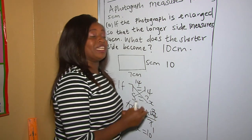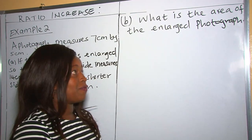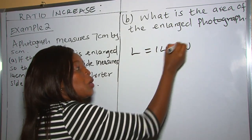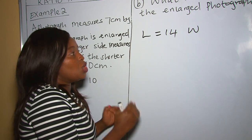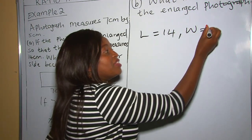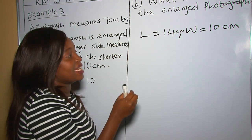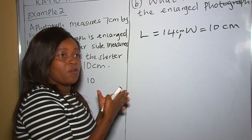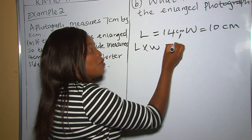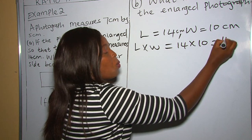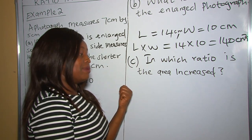Now let's proceed to part B of the same question: what is the area of the enlarged photograph? Our length is 14 centimeters and our new width after enlargement is 10 centimeters. The area of a rectangle is length times width, therefore it is 14 times 10, which is 140 centimeters squared.